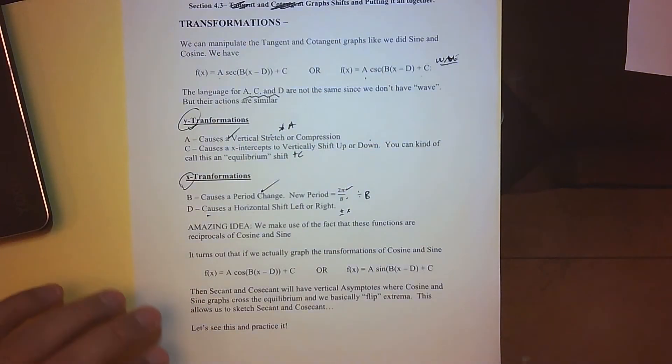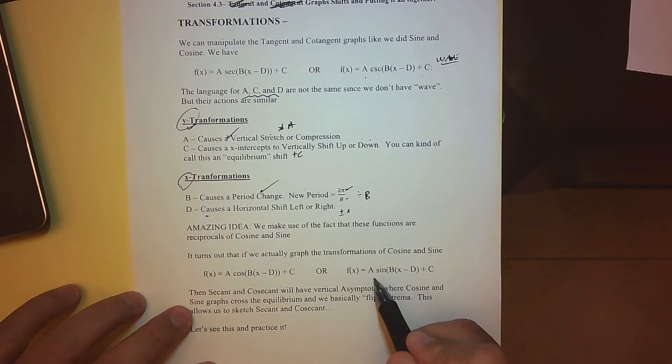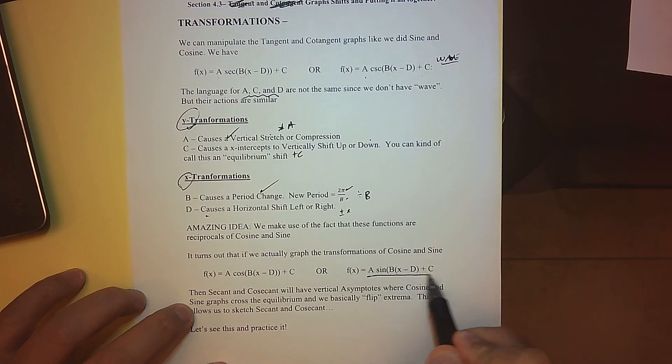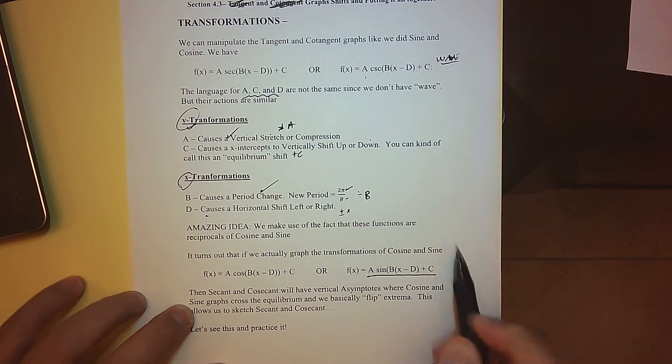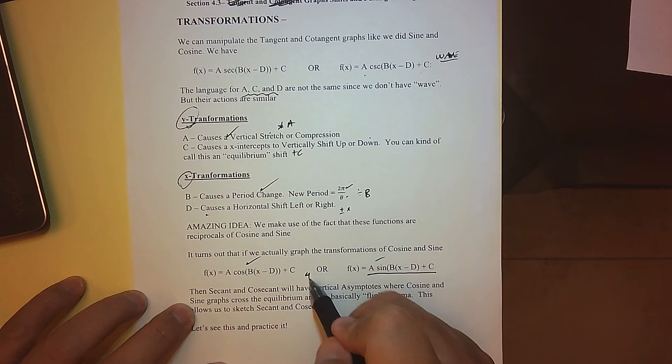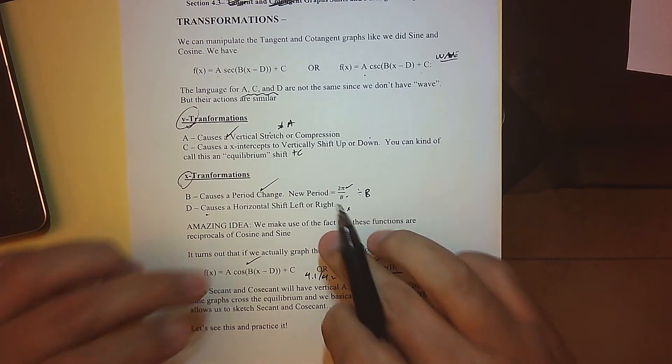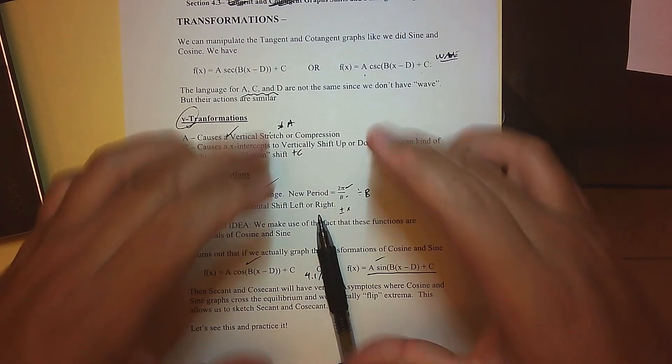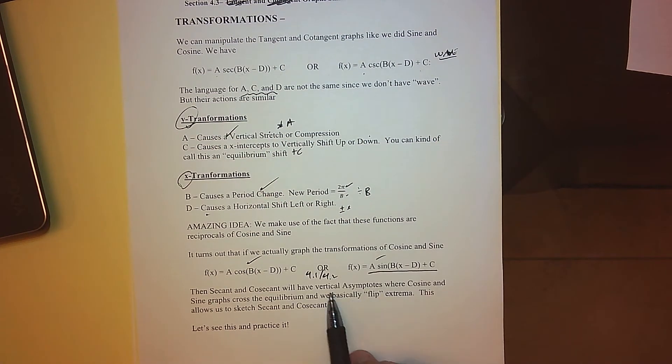And amazingly, as I shared with you guys, it turns out that if we can sketch the graph of a sine b of x minus d plus c, or a cosine of b times x minus d plus c, if we can graph these guys like we did in 4.1 and 4.2, then we use that reciprocal idea where we cross the equilibrium we have vertical asymptotes.